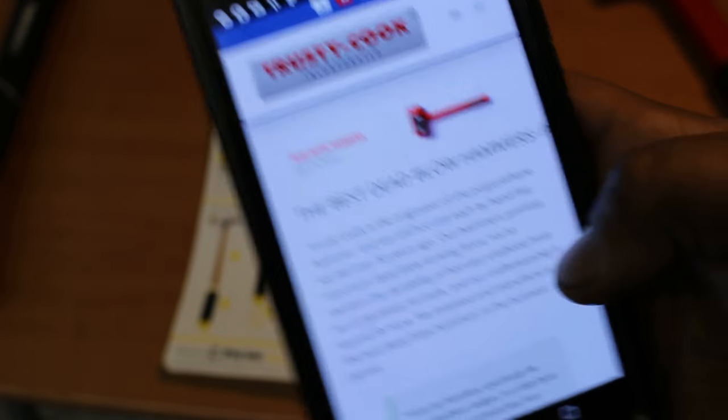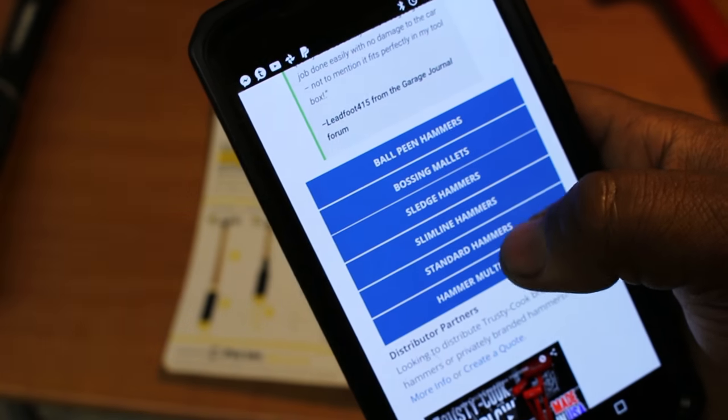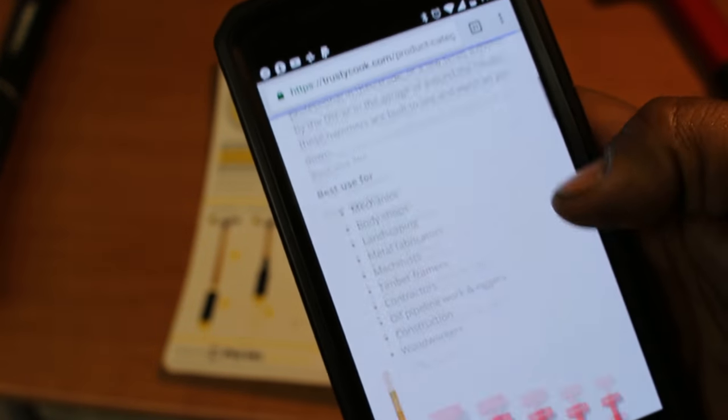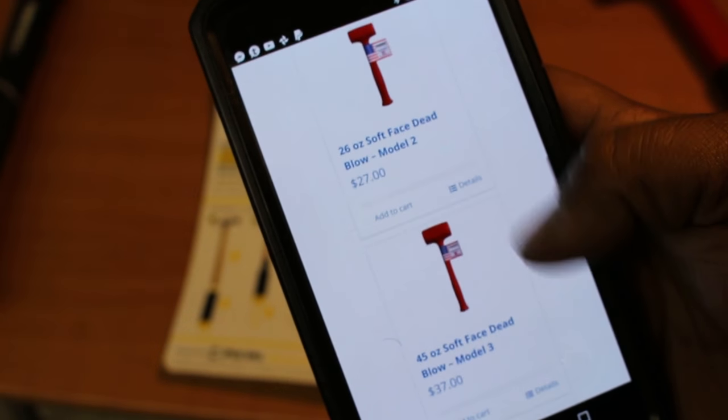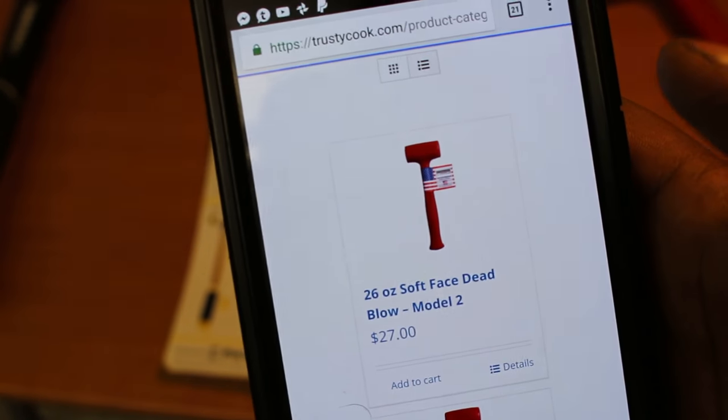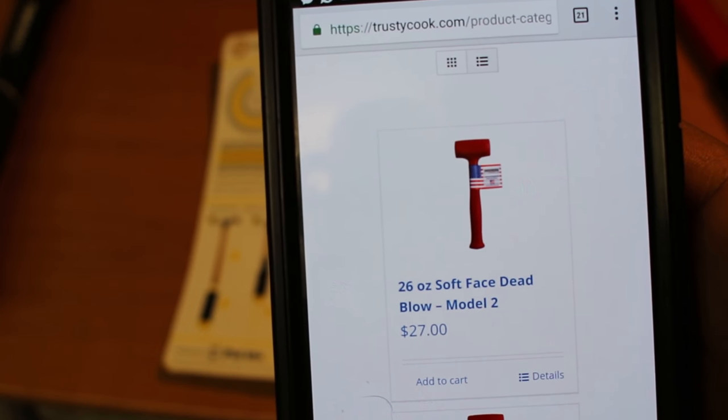Also on the same website, you can go to the dead blow hammer section and click on standard hammers for the price factor of it. And we can just scroll down to model two, which is the first one. So this is a 26 ounce hammer. And look at that, 27 bucks. Can't beat that.